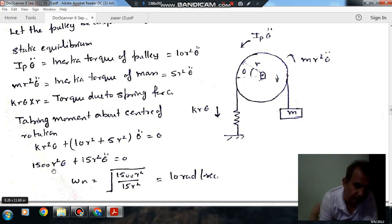Here the coefficient of theta is 1500R square and coefficient of theta double dot is 15R square. So dividing the two and finding the root will give the natural frequency, that is 10 radians per second.